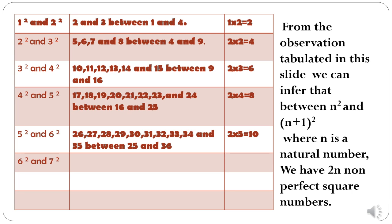For example, if we want to know how many non-perfect square numbers lie between 3 square and 4 square, it will be 2 into 3 that is equal to 6 non-perfect square numbers.